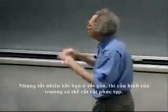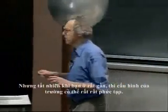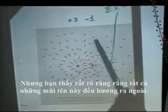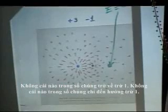But of course when you're very close in, then the field configuration can be very close. But you see very clearly that these arrows are all pointing outwards. None of them come back to the minus one. And that's because the plus three is more powerful.